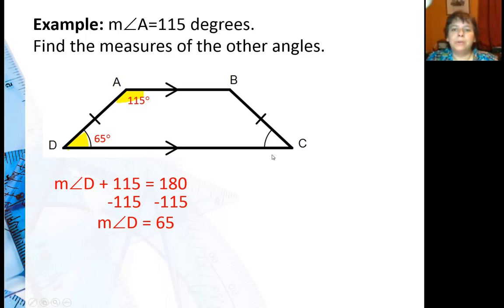Since these two angles are congruent, angle C also has to be 65 degrees. Well, if this is supplementary, that means angle B has to be 115. So you can see that both pairs of base angles will be congruent on an isosceles trapezoid.